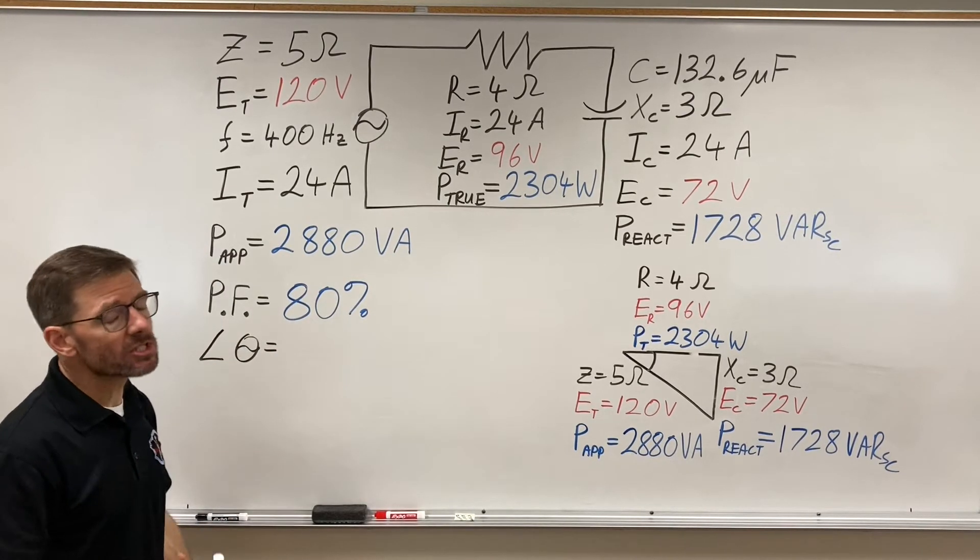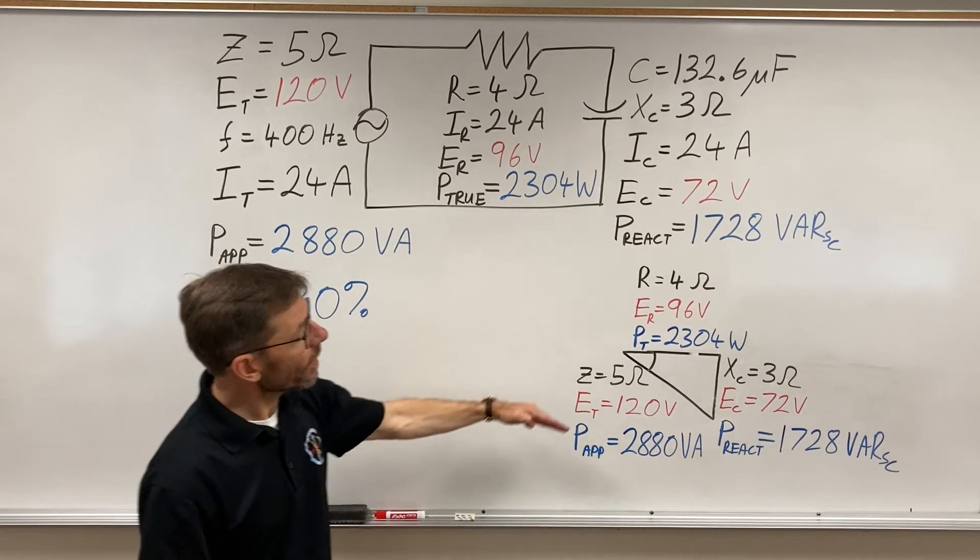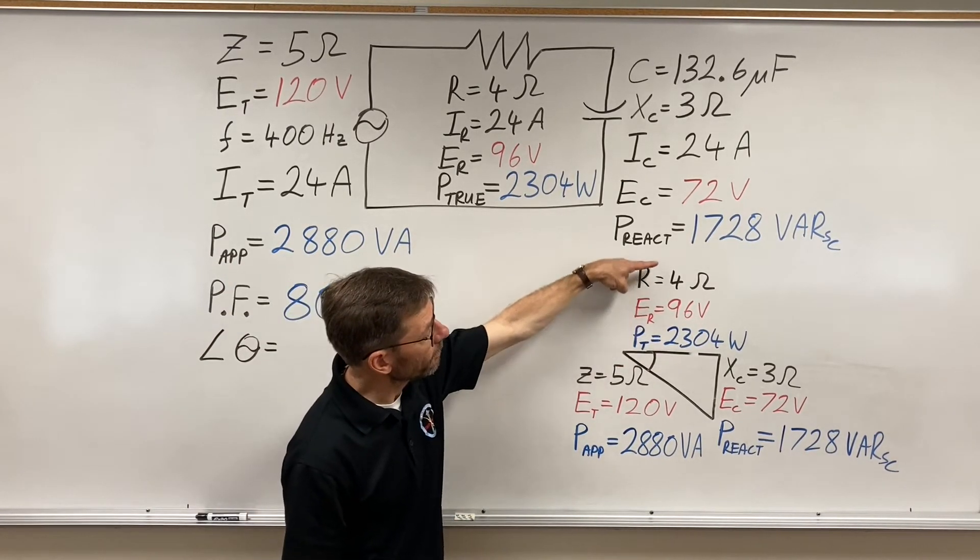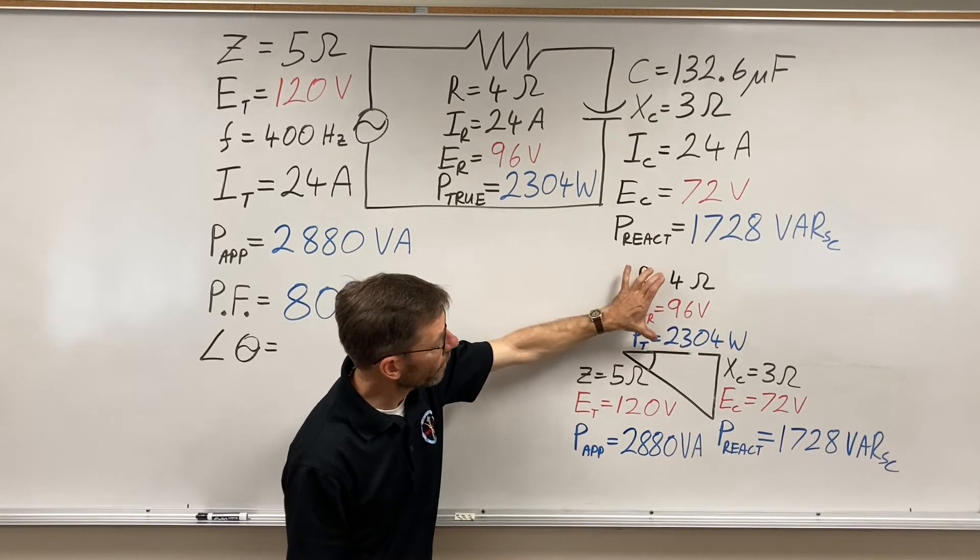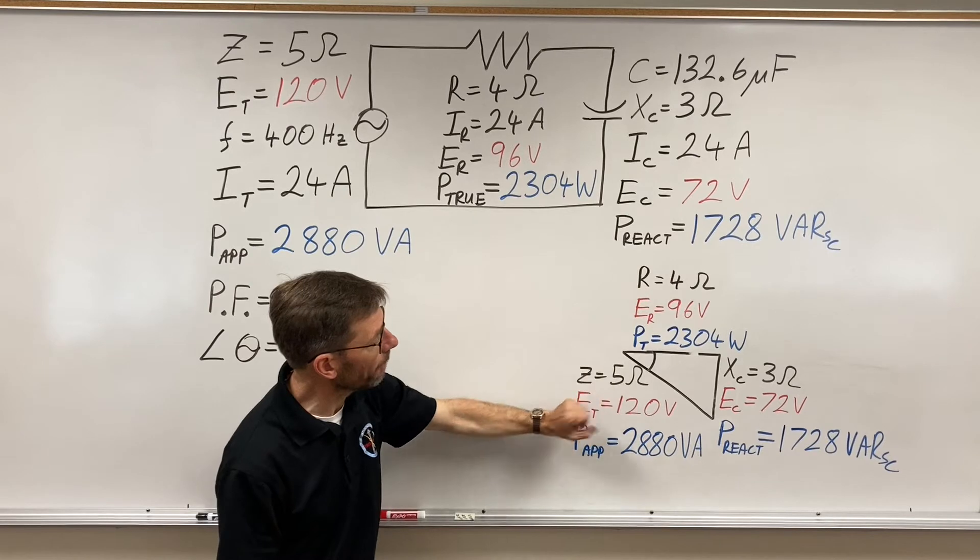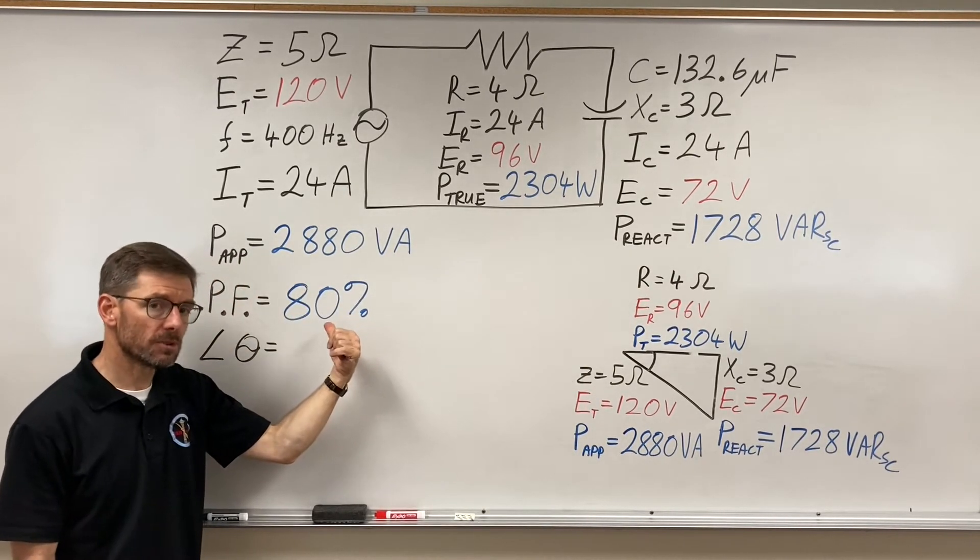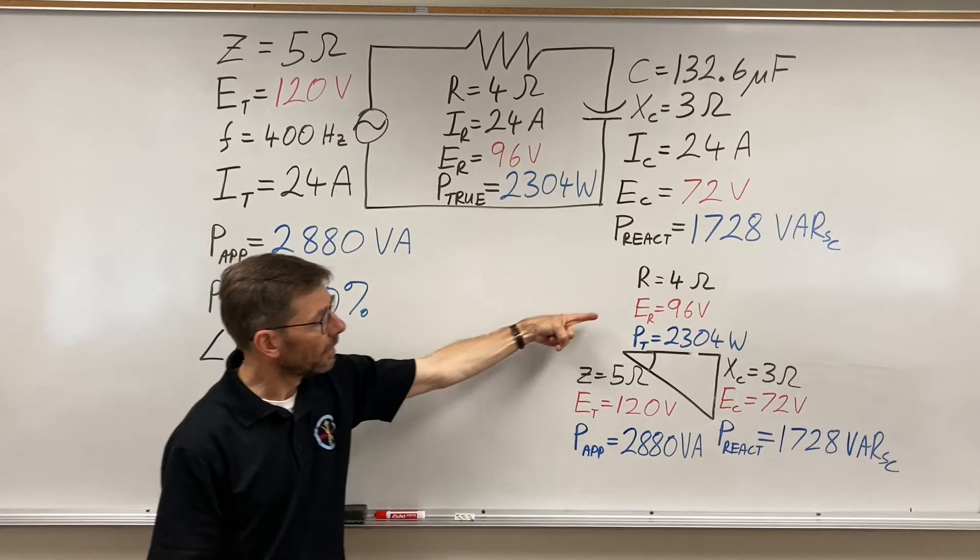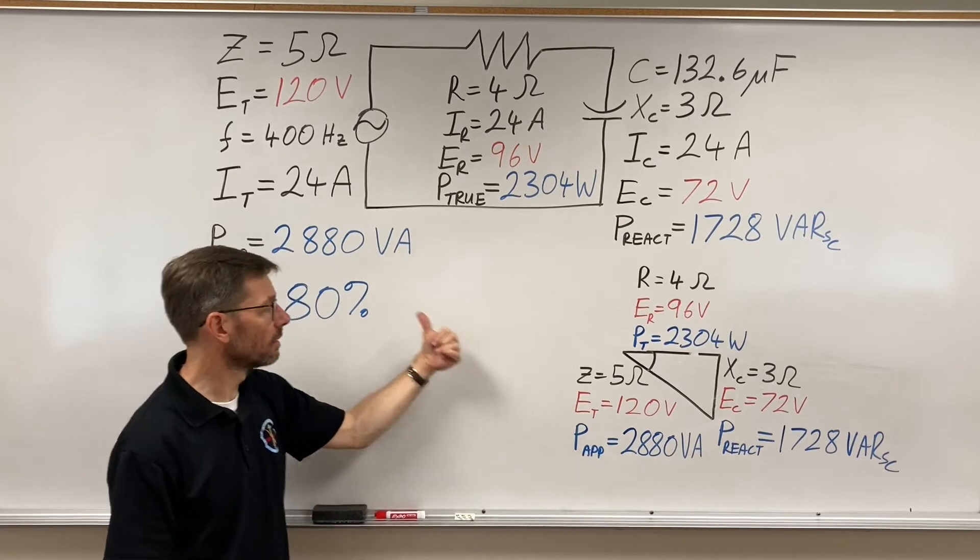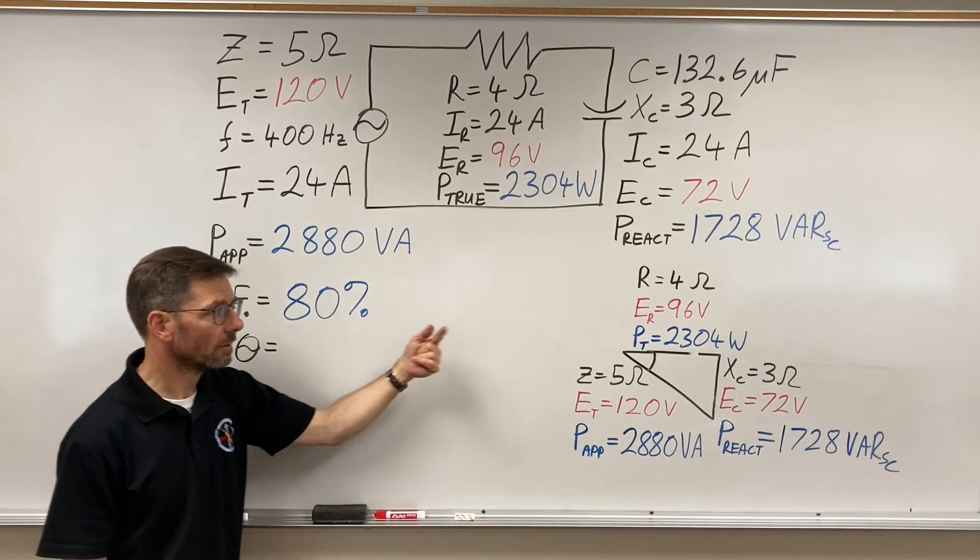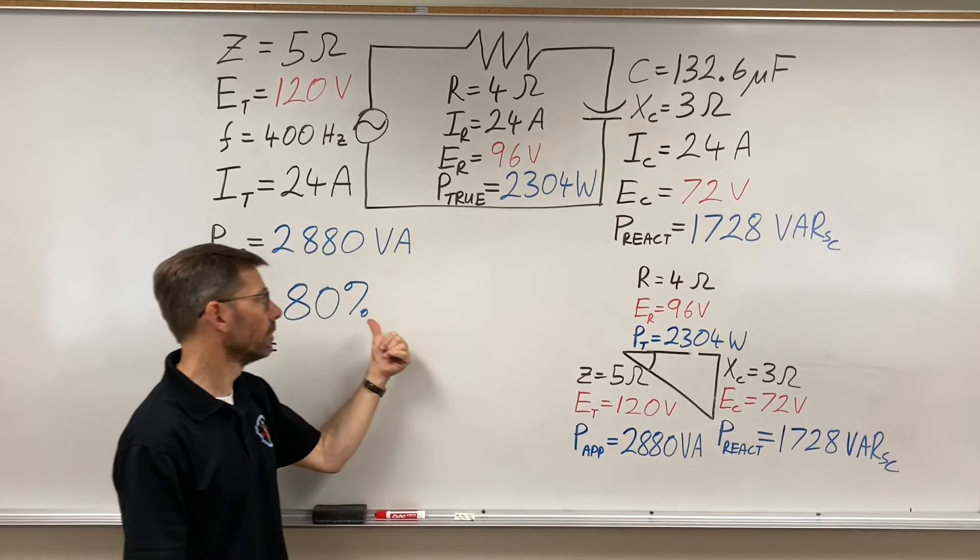And you know what we'll notice is this is just like the RL circuits. Could I have got that from any number of this side, the horizontal, with over its corresponding hypotenuse value? 4 divided by 5 is 0.8. 96 divided by 120, 0.8. 2304 divided by 2880, 0.8.